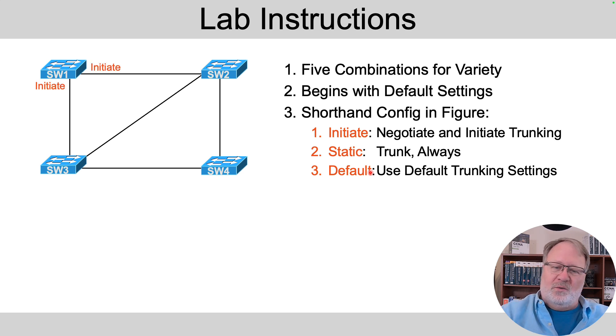So what's what? The instructions in the lab say on both of switch one's ports, dynamically negotiate trunking. Then on both ends of that middle trunk, use static trunking. And then on both of switch four's ports, use static trunking. All the rest use default, as we see here.